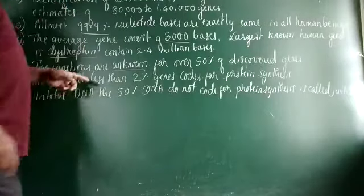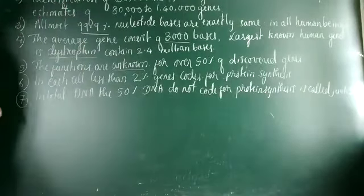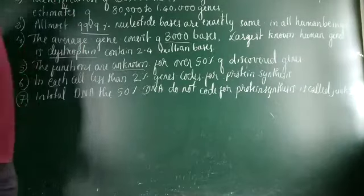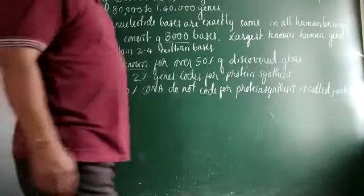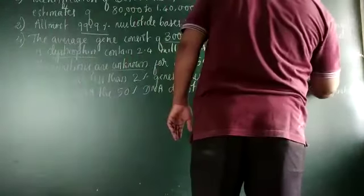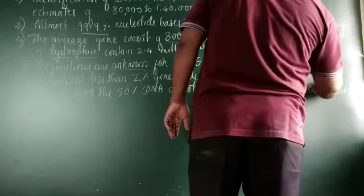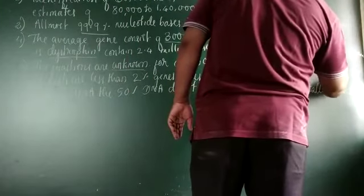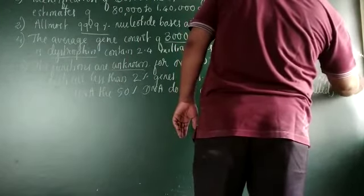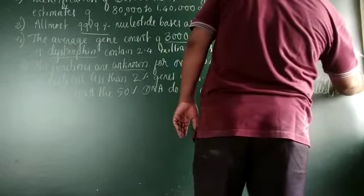Total DNA: 50% of DNA does not code for protein synthesis in the cell genome. This is the maximum in your camera. Repetitive DNA — repetitive sequences are present here.